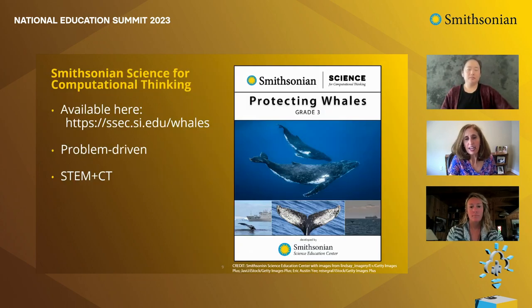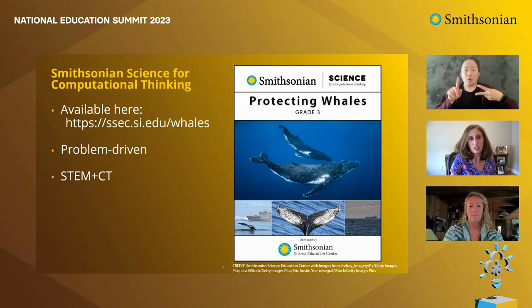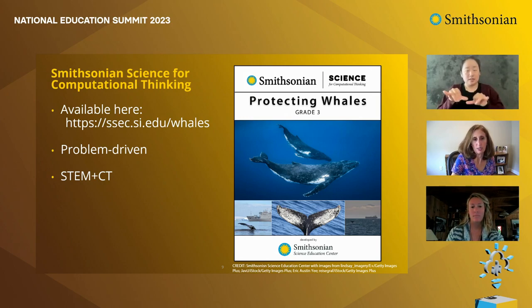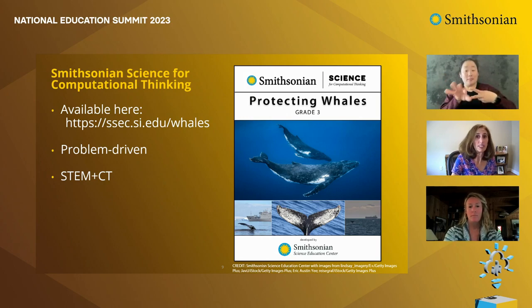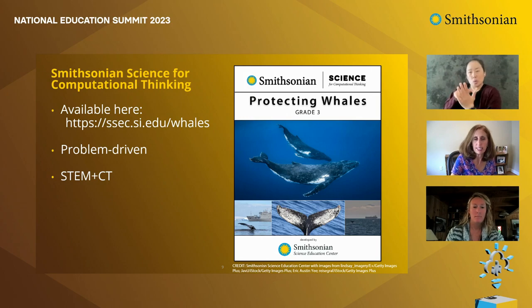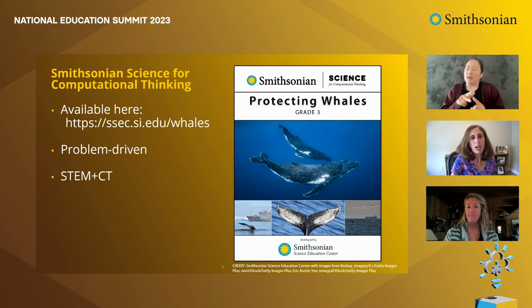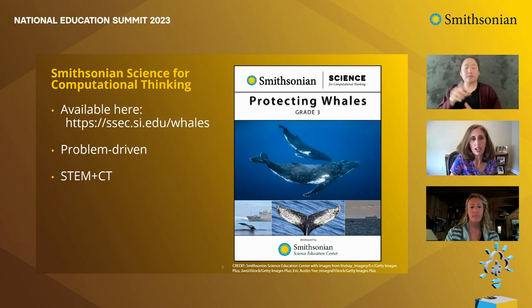The unit we're going to talk about today is one of two new units in our Smithsonian Science for Computational Thinking series. Both units are aligned to the Next Generation Science Standards and the computational thinking standards we just discussed, and both are freely available on our website. The unit we're diving into today is called Protecting Whales, designed specifically for third grade, though it could be used in grades two through five. Melissa has added a link to the landing page in the chat, which includes all resources you'd need to teach this unit.